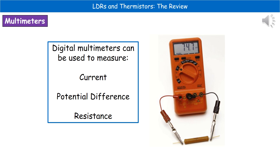One handy piece of equipment we can use when looking at circuits is something called a multimeter. Digital multimeters are really popular in DIY shops and are just a useful thing to have around the house, because they can measure current, potential difference, and resistance. All you need to do is twist the little dial to represent the correct setting and make sure you're connecting into the right terminals. So with that one piece of equipment you can measure three different values, which is obviously very useful.